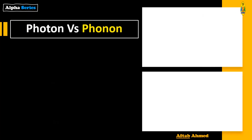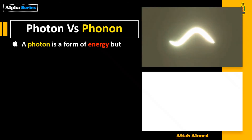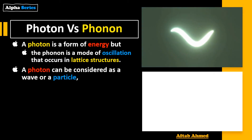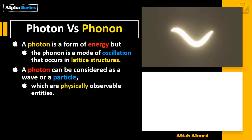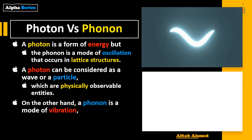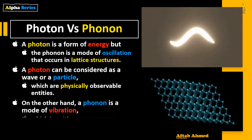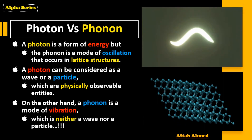Photon versus phonon: a photon is a form of energy, but a phonon is a mode of oscillation that occurs in lattice structures. A photon can be considered as a wave or a particle, as in wave-particle duality, making it a physically observable entity. On the other hand, a phonon is a mode of vibration which is neither a wave nor a particle.